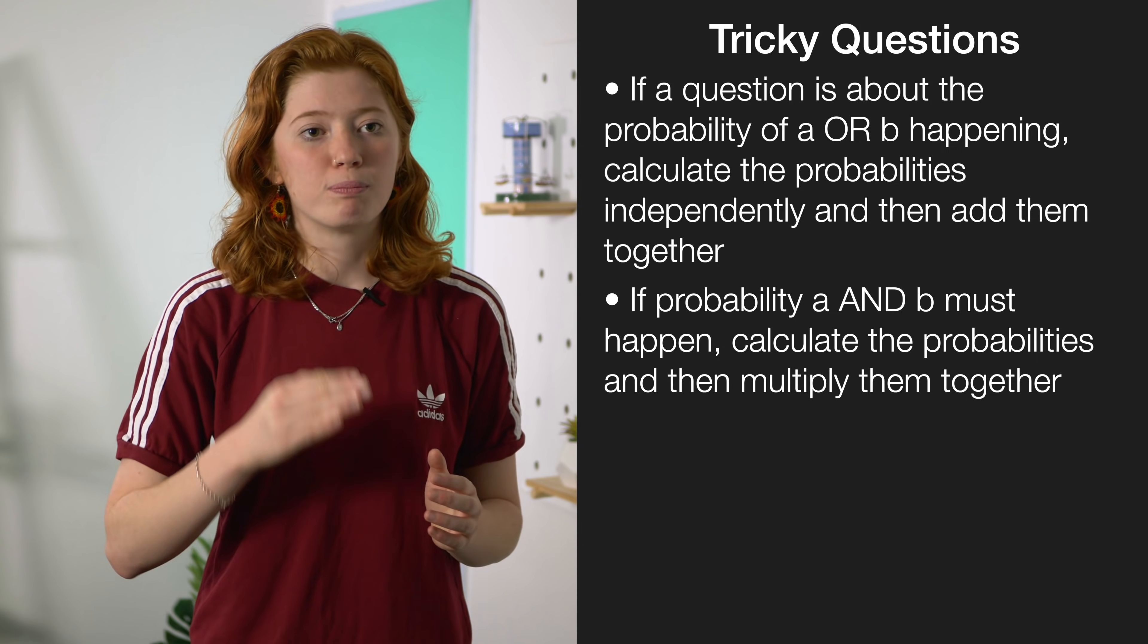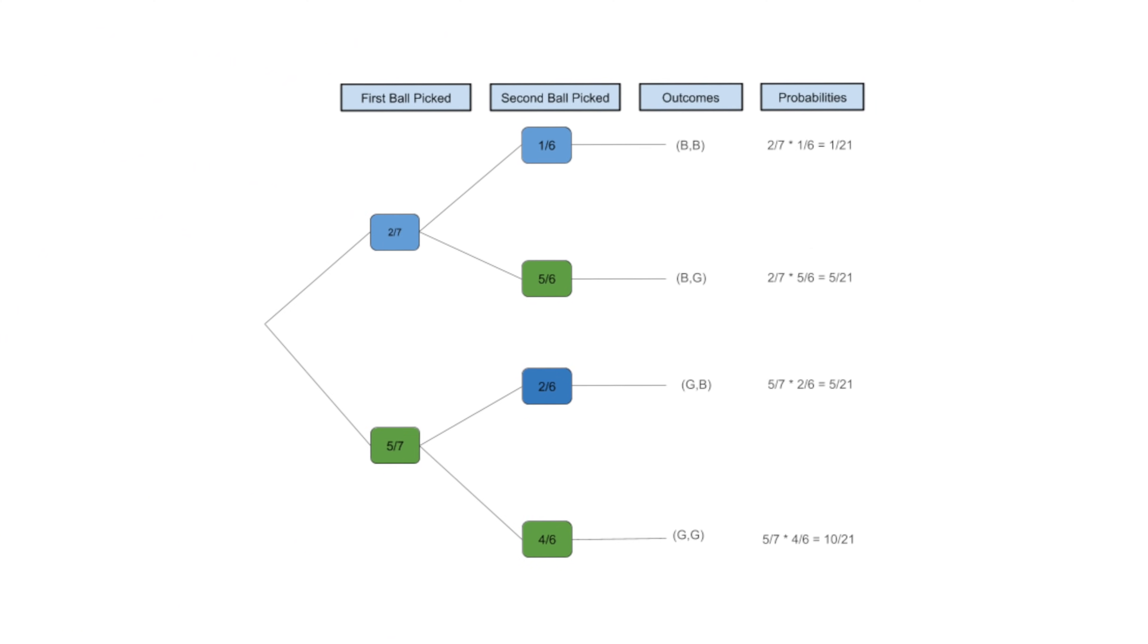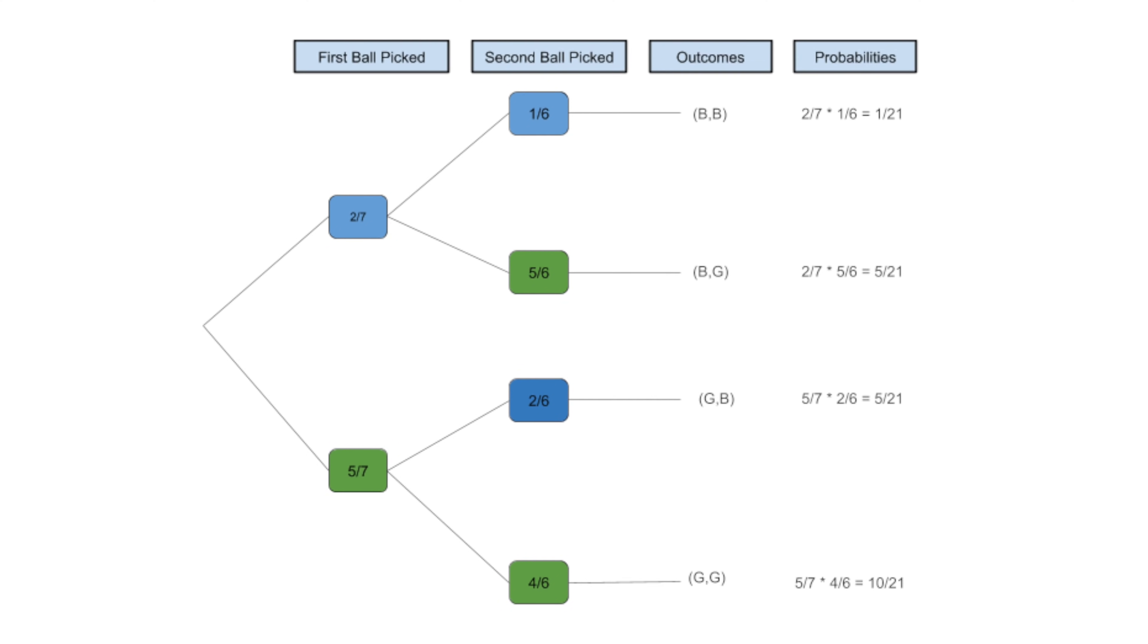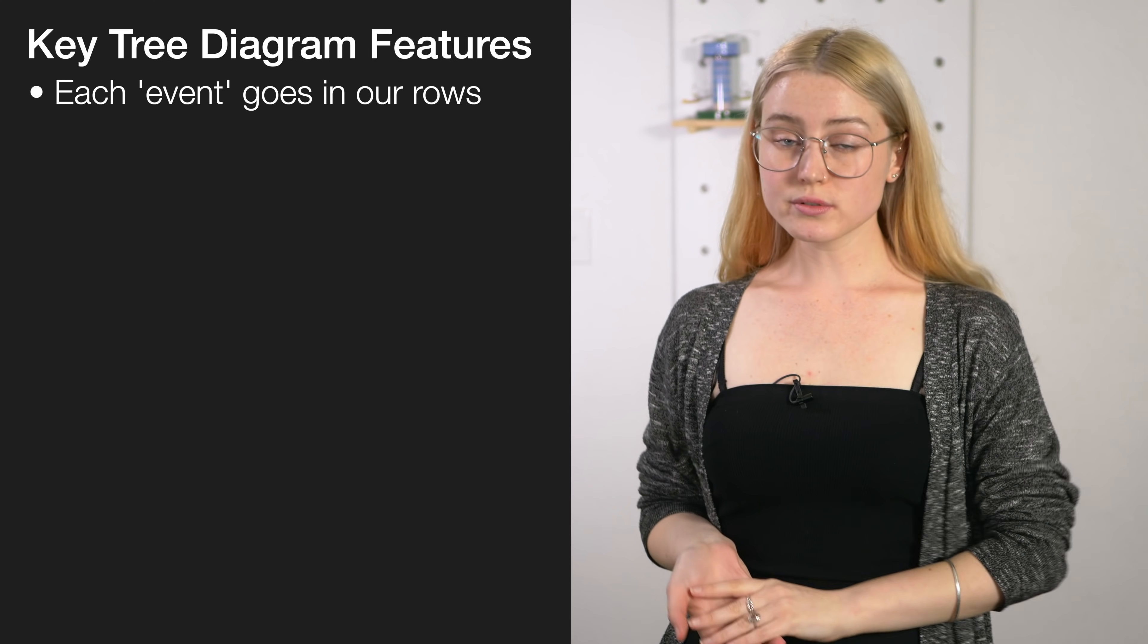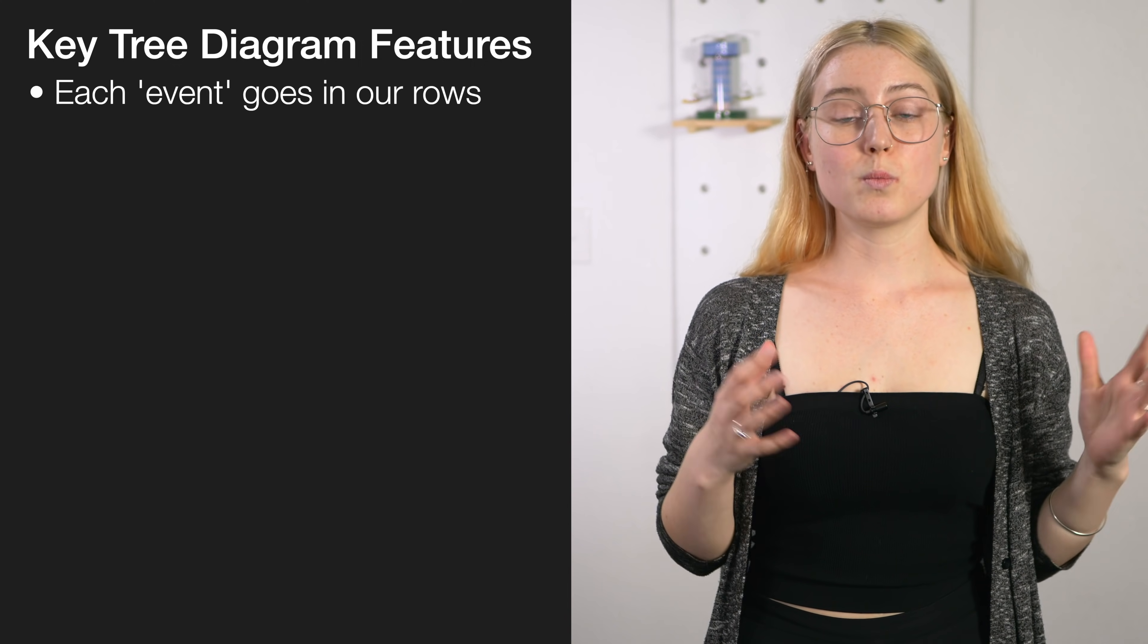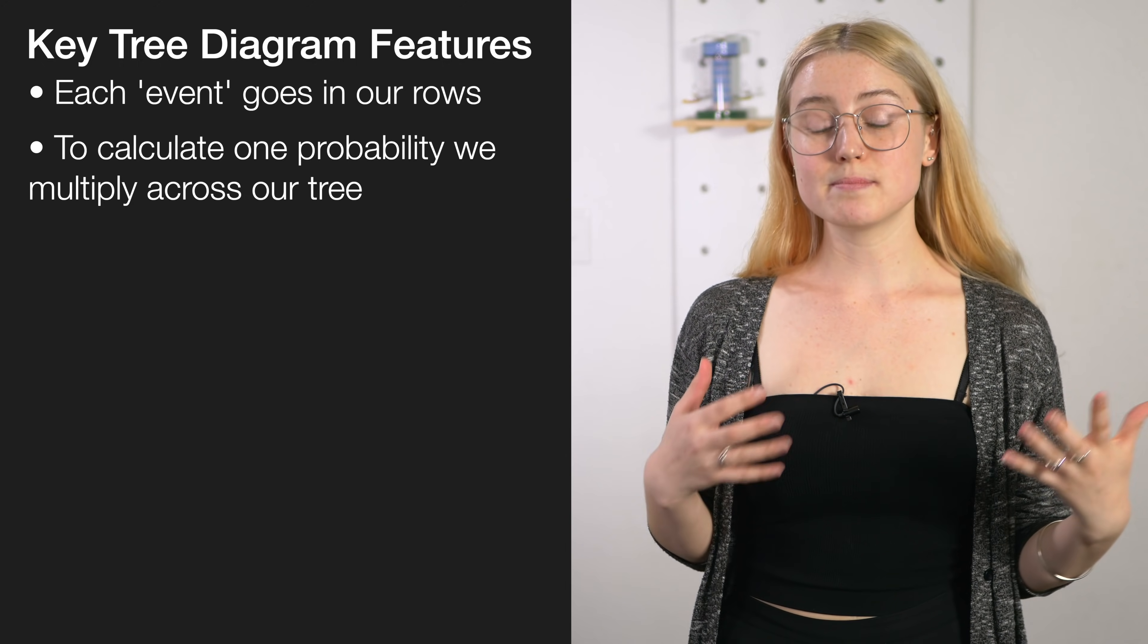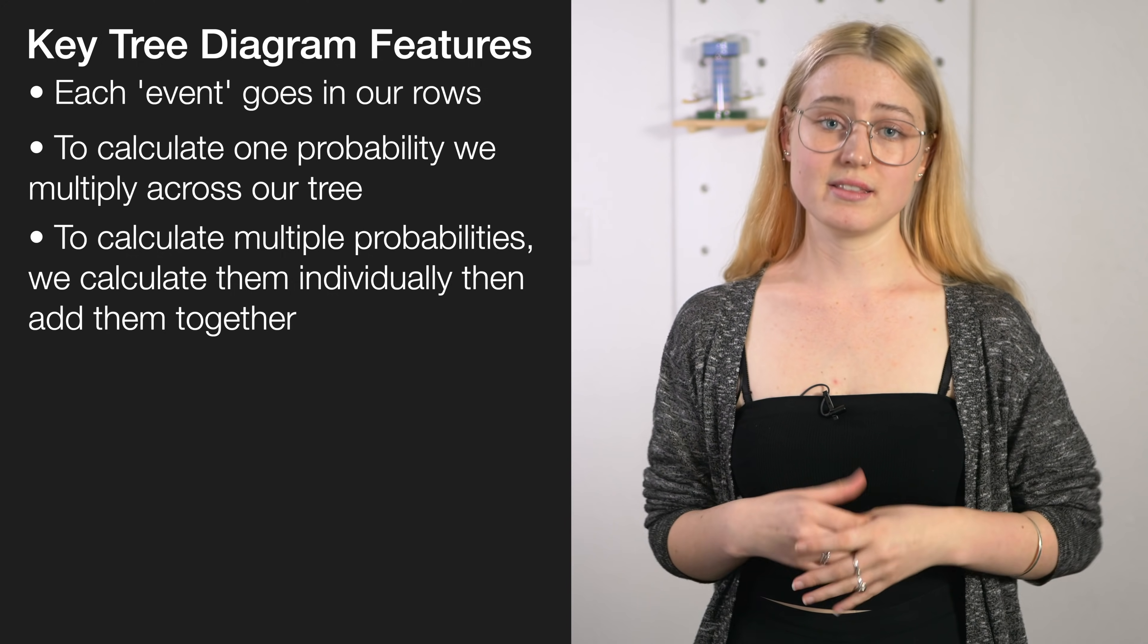If you get given a question with multiple steps that have to happen, draw a tree diagram to help you work it out. Over here is a tree diagram with two red balls and five blue balls where we're drawing one out without replacement. Understanding the important features of tree diagrams is key in understanding how to actually interpret them. You should bear in mind that events or selections are the first layers of the tree and they go in your rows. If you're trying to calculate one probability we multiply down our trees. If we're wanting to add some multiple probabilities together we calculate the probabilities individually and then add them together right at the end.